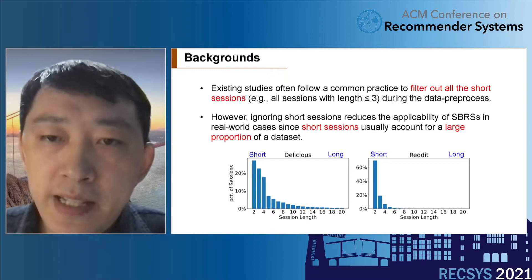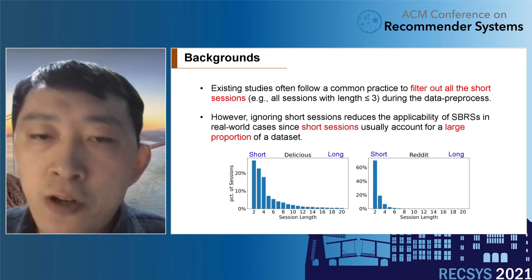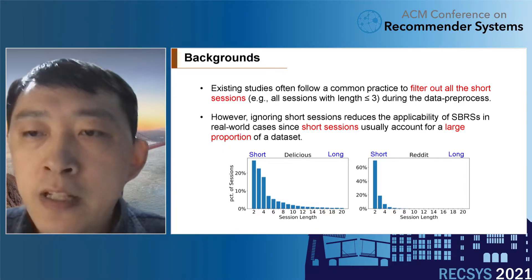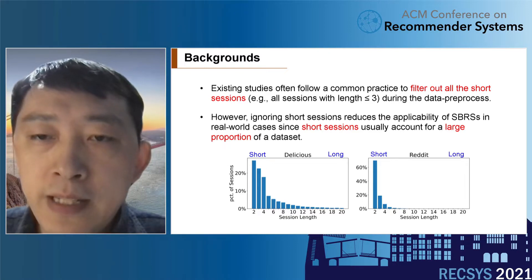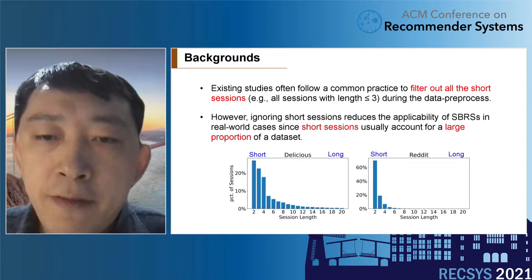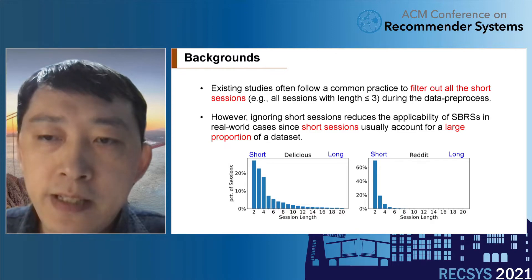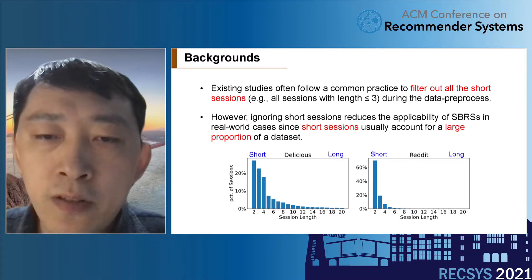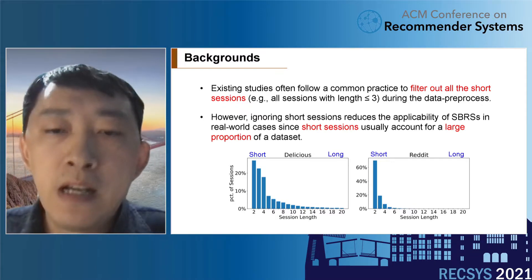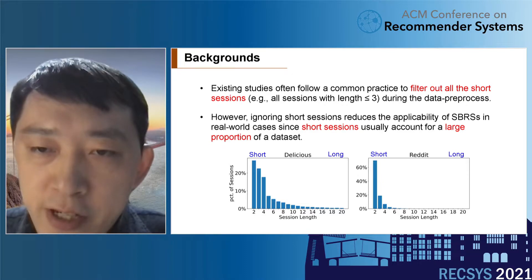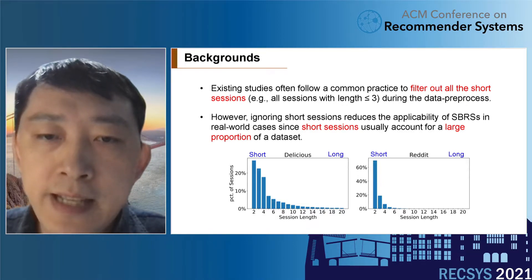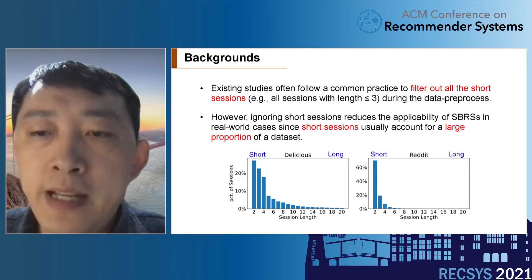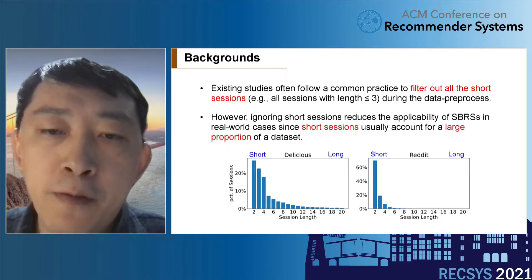Existing studies focus on long sessions and ignore short sessions because they often filter out all short sessions during data preprocessing. However, ignoring short sessions reduces applicability in real-world cases, since short sessions usually account for a large portion of a dataset. For example, two real-world session datasets — Delicious and Reddit — have over 60% and 90% short sessions respectively, with no more than five items.